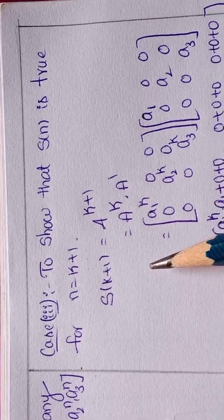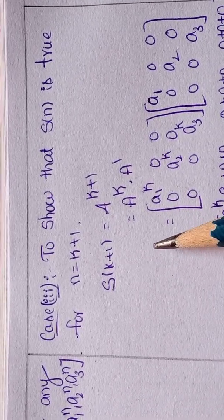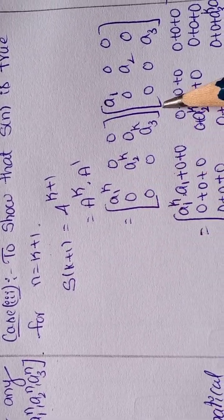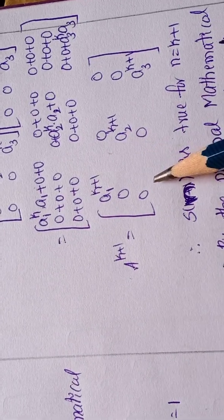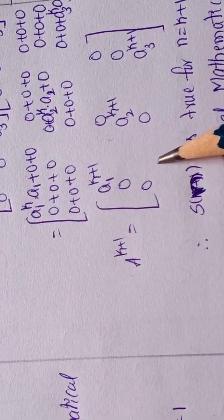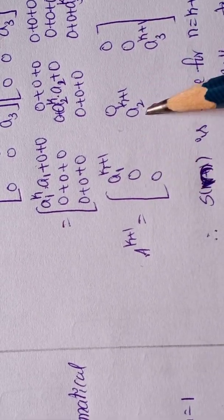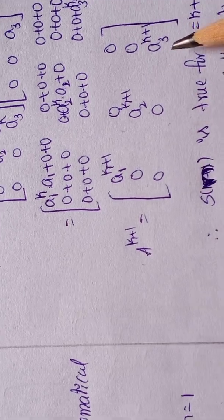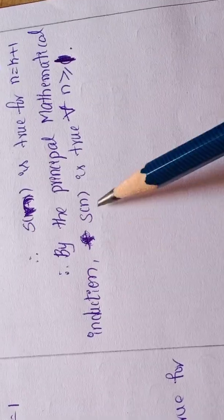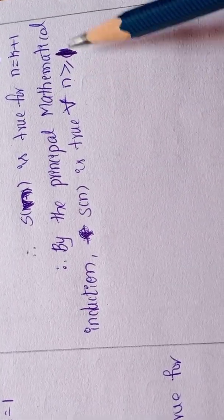Case 3: we will show that S of n is true for n equal to k plus 1. So in the place of n substitute k plus 1. We show the result: diag of A1 power n, 0, 0; 0, A2 power n, 0; 0, 0, A3 power n. By the principal of mathematical induction, S of n is true for all n greater than or equal to 1.